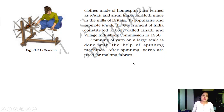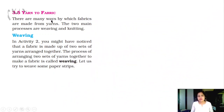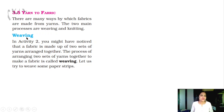After spinning, yarns are used for making fabrics — this is yarn to fabric. There are many ways by which fabrics are made from yarns. The two main processes are weaving and knitting. In Activity 2, you might have noticed that the fabric is made up of two sets of yarns arranged together — one horizontal and one vertical. The process of arranging two sets of yarns together to make fabric is called weaving.